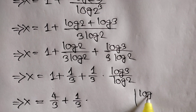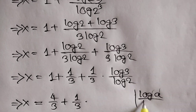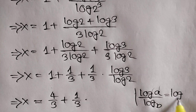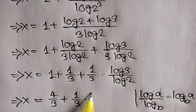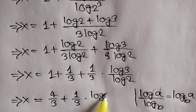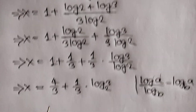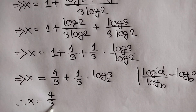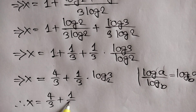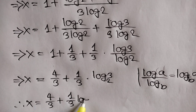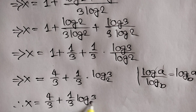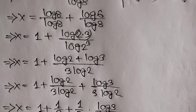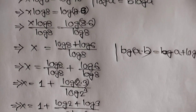We know log of a by log of b is equal to log of a base b, so we can write log of 3 base 2. So finally the value of x is equal to 4 over 3 plus 1 over 3 times log of 3 base 2. Thank you for watching. If you like this video please subscribe to my channel, and see you in the next video, bye bye.